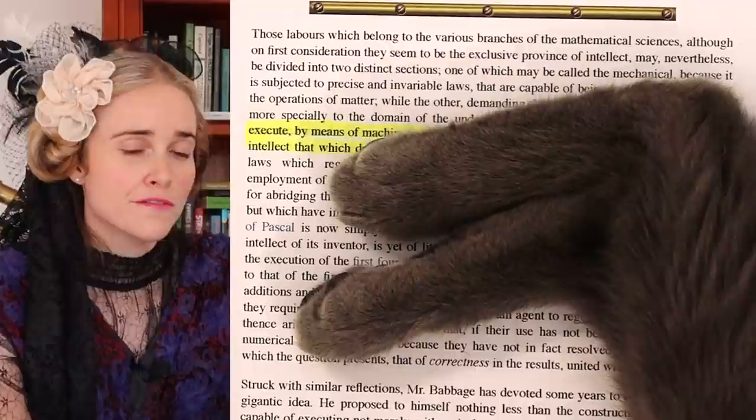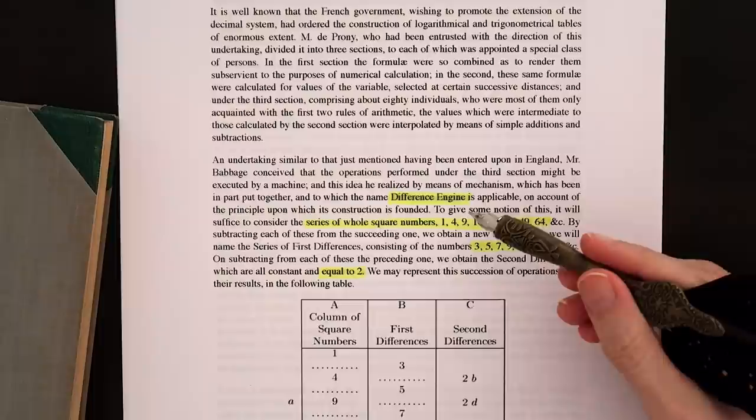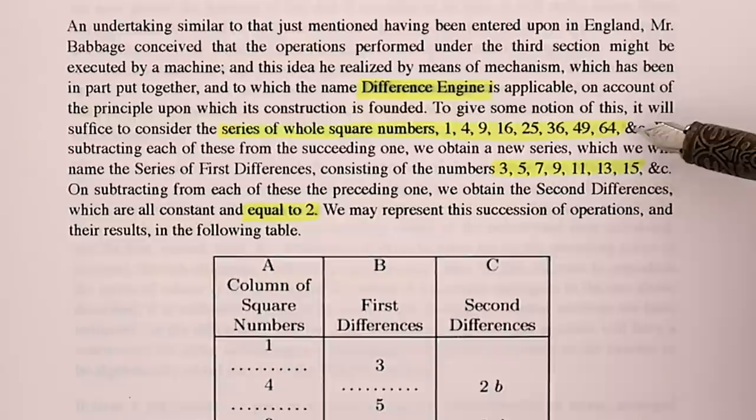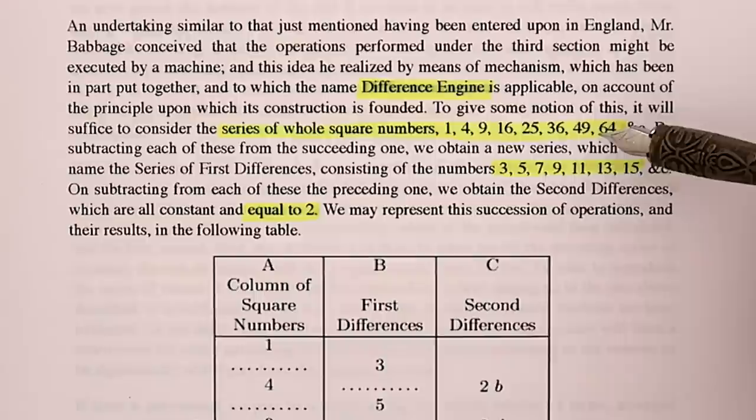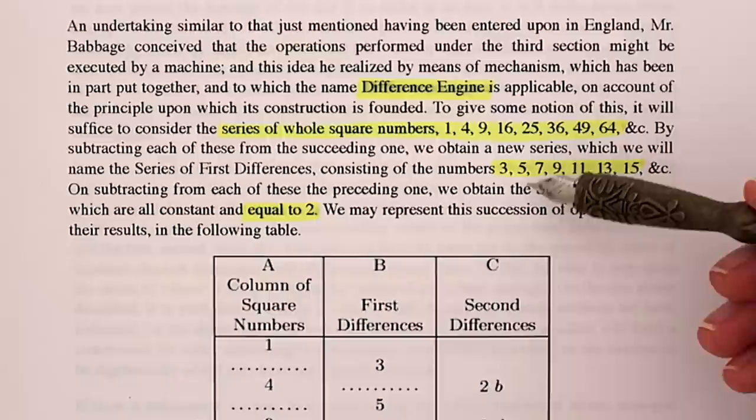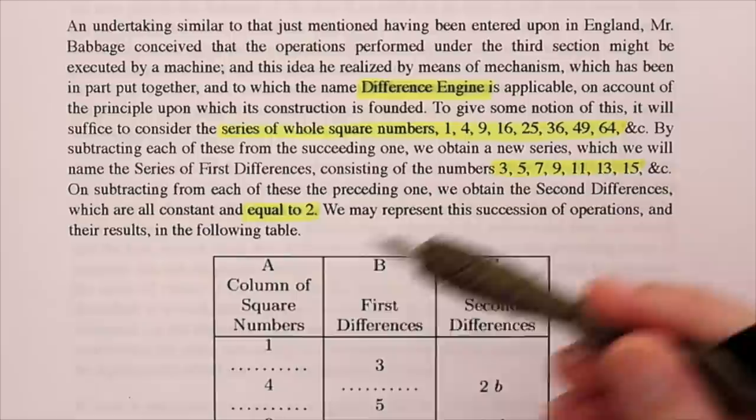Charles Babbage first came up with the difference engine. In this example, we have the series of whole square numbers: 1, 4, 9, 16, 25, and so on. If we find the difference between each of these numbers, we'll get a new series: 3, 5, 7, 9, 11. And the difference between each of these numbers is always equal to 2, as shown in this table here.